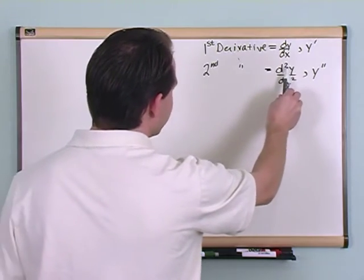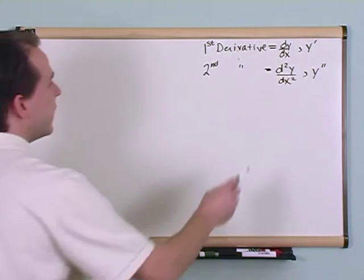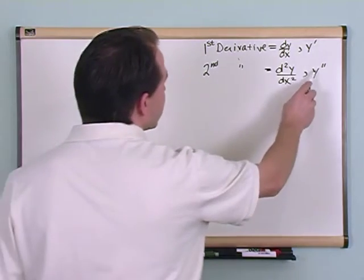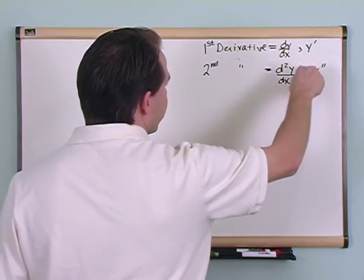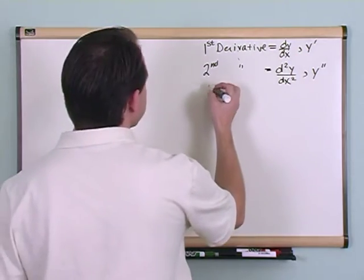Don't ask me why they decided to put the two here and here, I don't know, that's lost in the history of calculus. But this is how you write the second derivative. You can also write it with your variable with the two prime marks to indicate that you want to take the derivative three times.